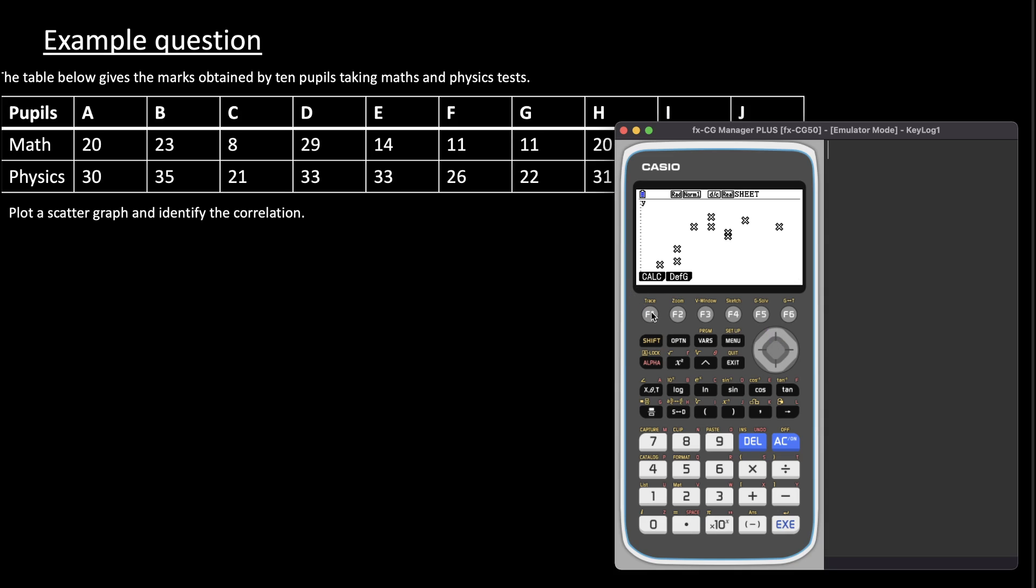And additional to this, in order to calculate the data and the mean values, you can press Calc and then again. And this will give you the mean, the sum of all the X values, the sum of all squares, squares of X values, and so on. It also counts the number of values. And it does the same for Y. So you get your Y bar, sum of all values of Y, and so on.